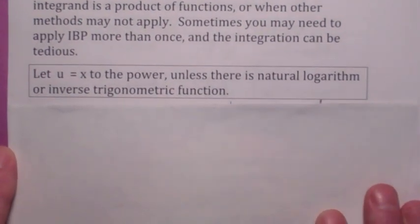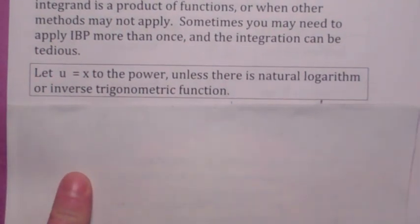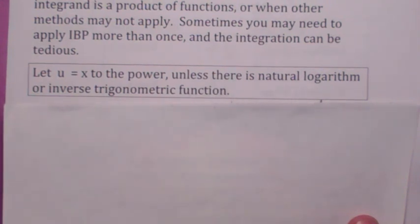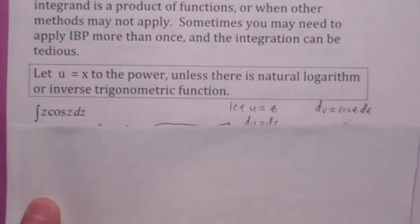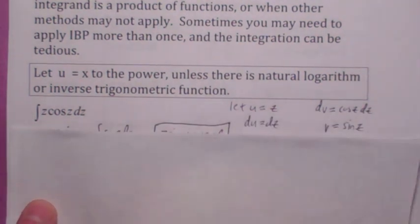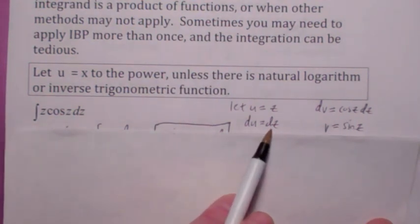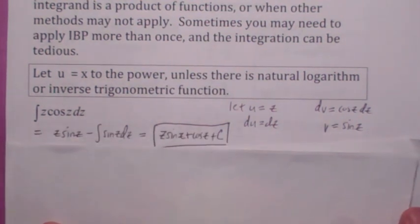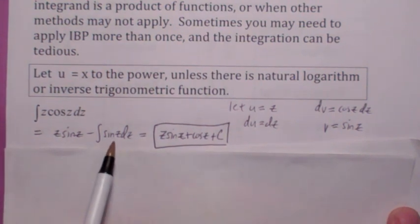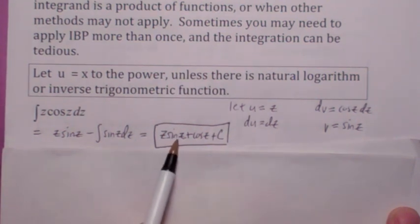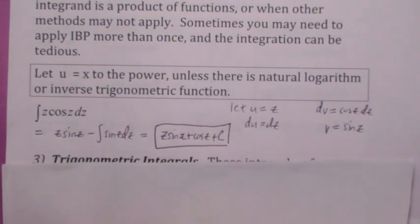One helpful thing to remember is, if you're trying to figure out, if you're using integration by parts, which to be u, which to be dv. Let u equal x to the power, unless you see a natural log or inverse trig function. That's a simple way to remember it. So in this particular case, we'd let u equal z, and dv would be cosine z dz. That makes du dz and v sine z. So you just get uv minus the integral of v du. So the integral of sine z would be negative cosine z, right? Well, there's a negative sign here, so it's just z sine z plus cosine z plus c.